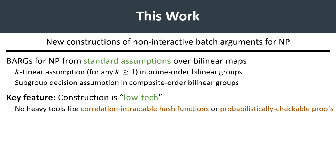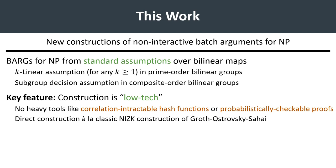Namely, we do not rely on heavyweight cryptographic tools like correlation-intractable hash functions, or on information-theoretic building blocks like probabilistically checkable proofs, both of which have featured prominently in nearly all previous constructions of similar primitives. Instead, we give a direct construction in the manner of the classic non-succinct non-interactive zero-knowledge proof of Groth, Ostrovsky, and Sahai.